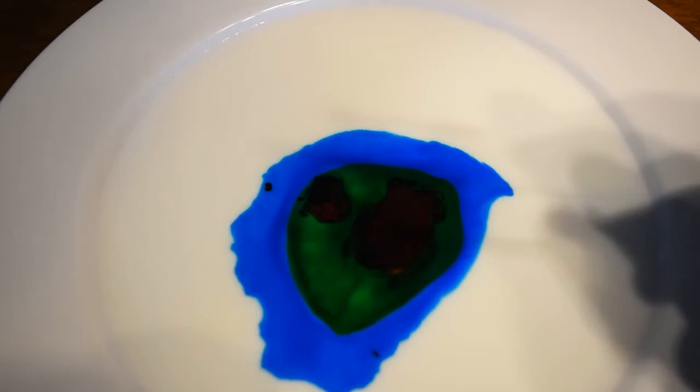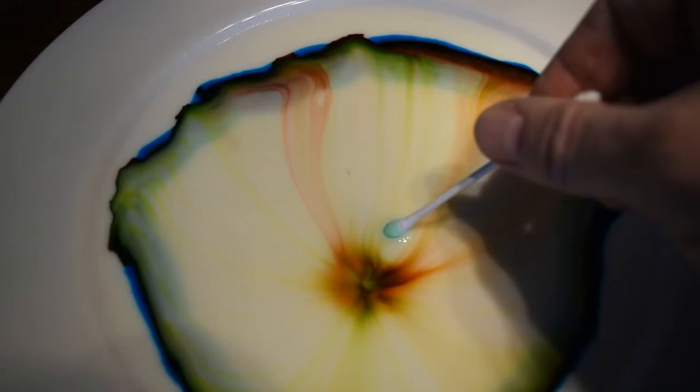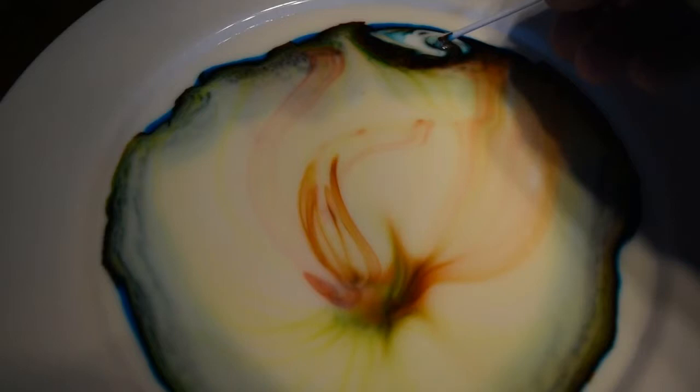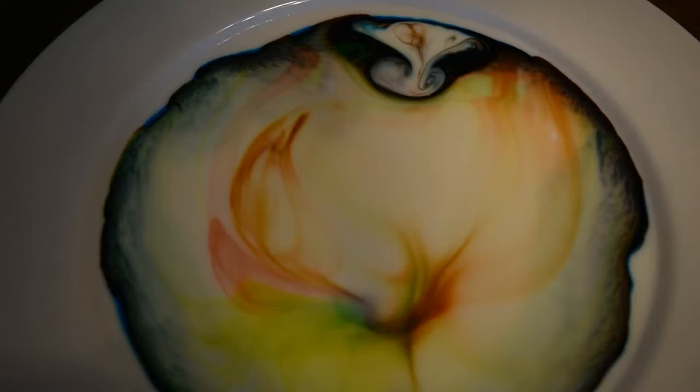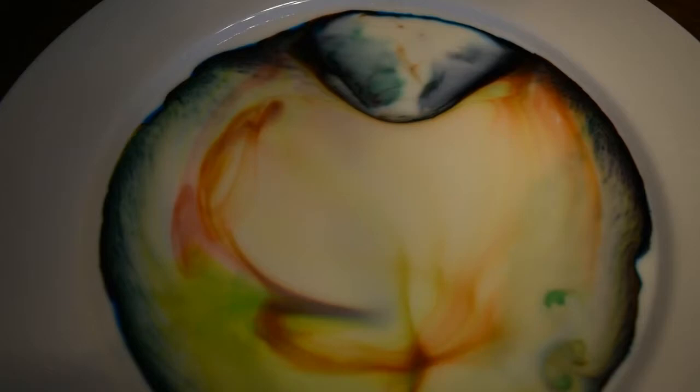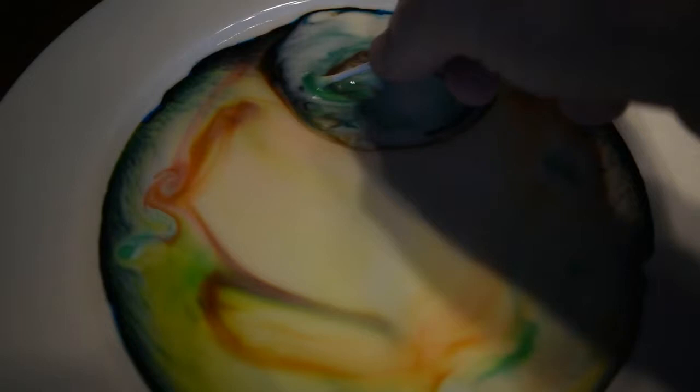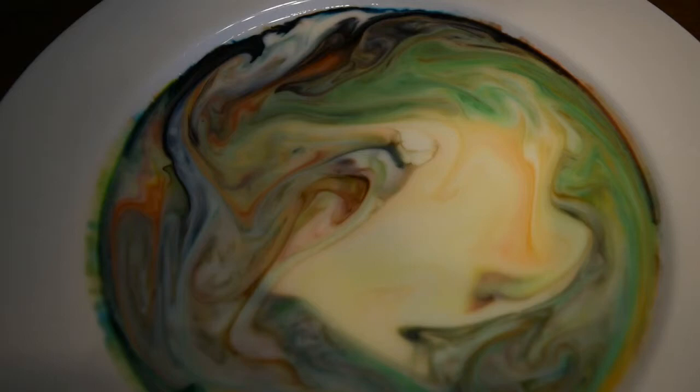We dip the q-tip in the dish soap. We're going to plunge it right in the middle. Here we go. See how everything explodes in a kaleidoscope. You can go over here. A little more dish soap over there keeps it moving again. More dish soap down here. A little bit over here. You can also stir it up a little bit. That gives you a nice swirling color pattern.